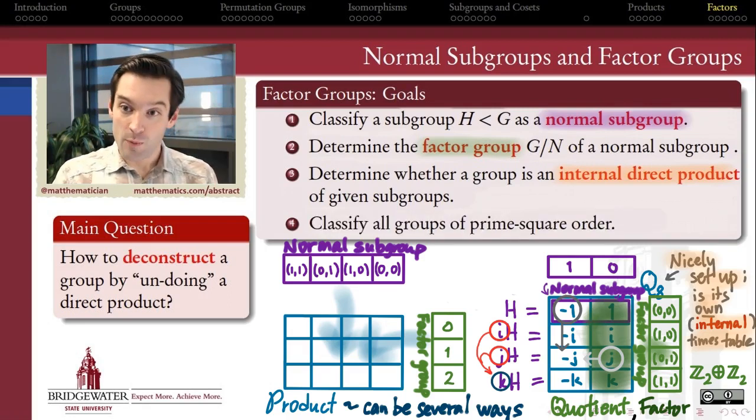And finally, we want to understand what we've gained out of this process by learning how to break apart groups along their normal subgroups, how to undo a product via normal subgroup. We then are going to be able to classify what are all possible finite groups in the world whose order is the square of a prime number. So we'll be able to classify all groups of prime squared order at the end of this series of videos.